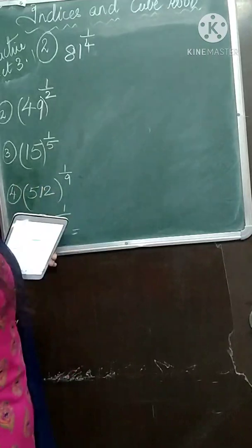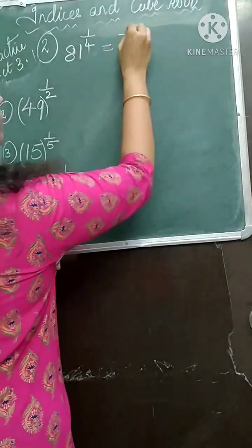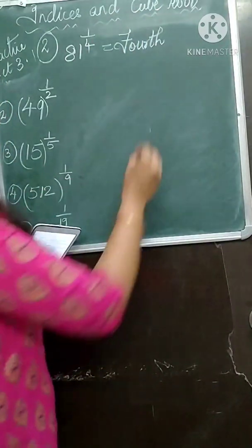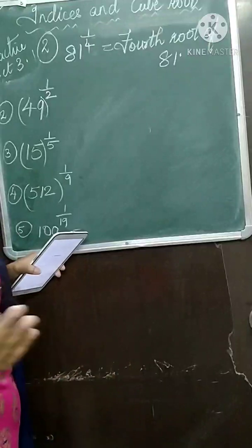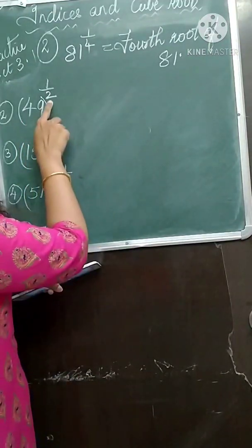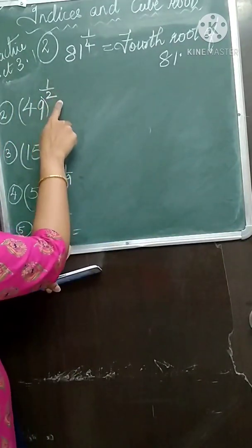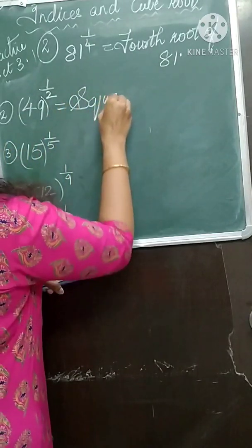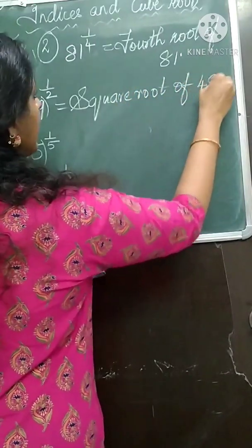Now remember, 4 is the denominator, so we will use the word 'root'. You will write it as fourth root of 81. Similarly, for the next one, 2 is the denominator. For 2 we will use the word 'square', so the answer is square root of 49. Write it in neat handwriting.